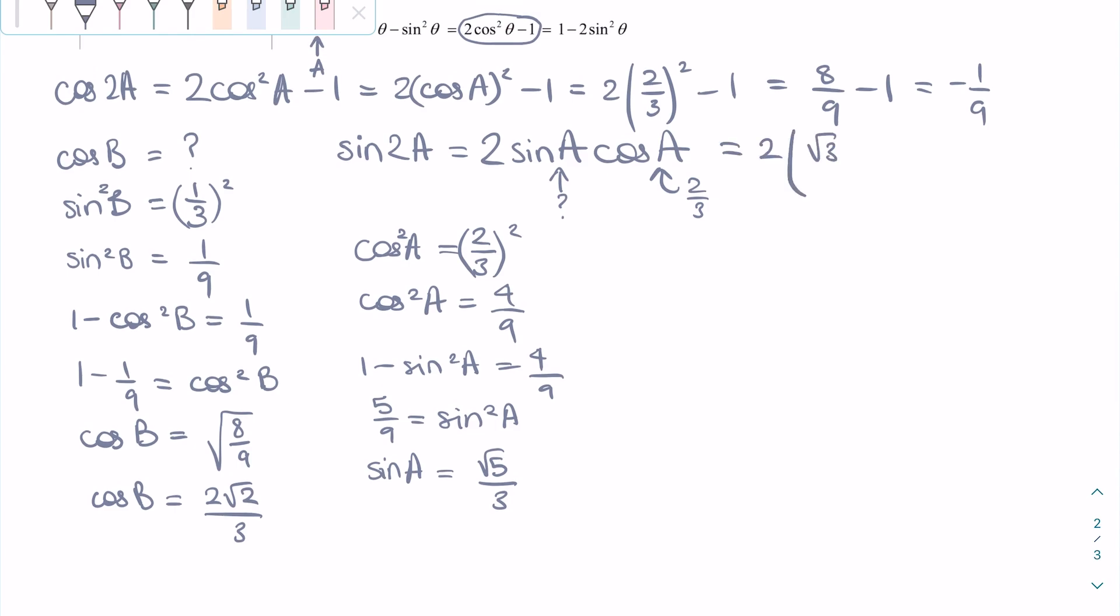And we get sine A is equal to square root of 5 over 3. So we can rewrite sine 2A as 2 times square root of 5 over 3 times 2/3. This is equal to 4 square root of 5 over 9.